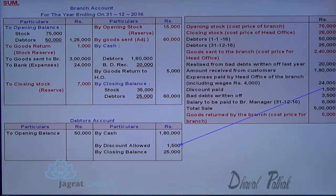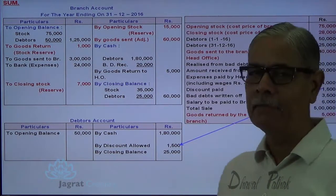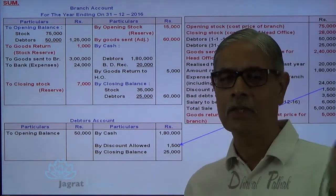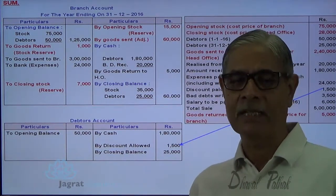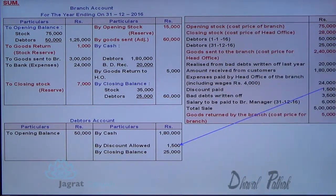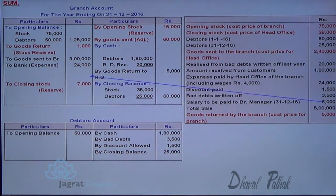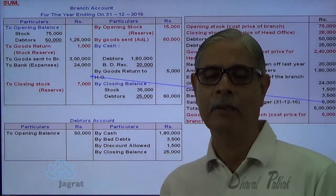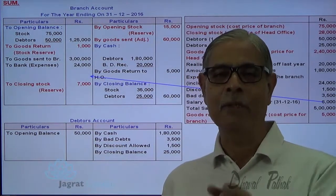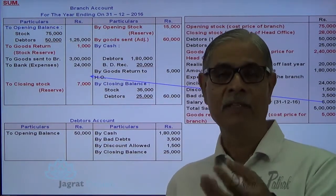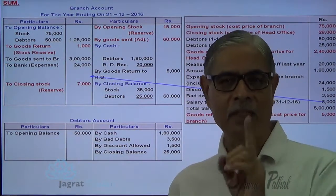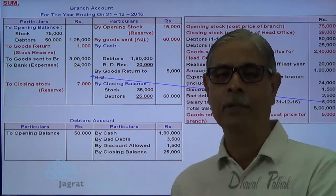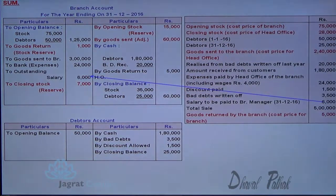Discount allowed: debtors account is to be credited. This is a transaction between branch and customers. Head office is not a party to this transaction, so it cannot be recorded in branch account. Bad debts written off - same way, credited to debtors account. Salary to be paid to the manager is a liability at the end of the accounting period. All the assets and liabilities of the branch are to be taken over. When the liability is taken, branch account debit to liability account credit. So branch account debit to outstanding salary account credit. Goods return is already done.